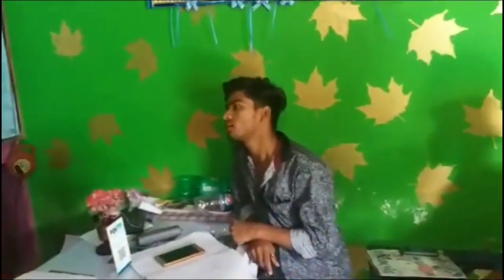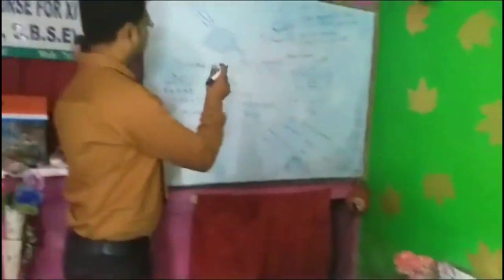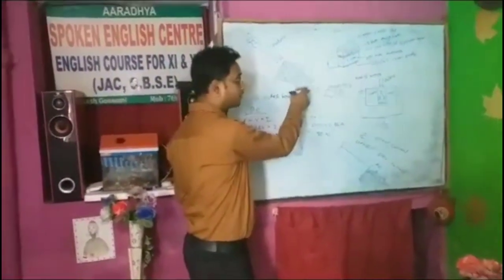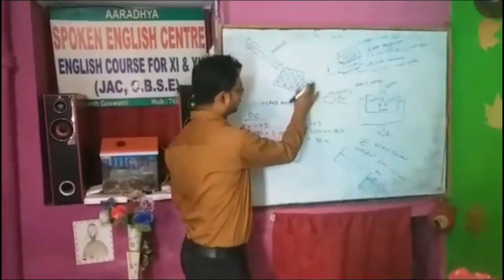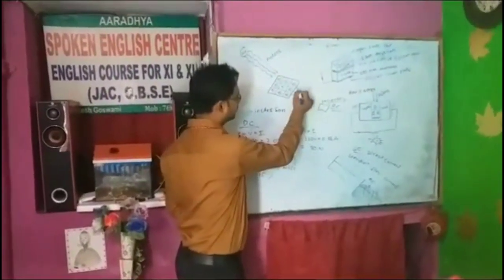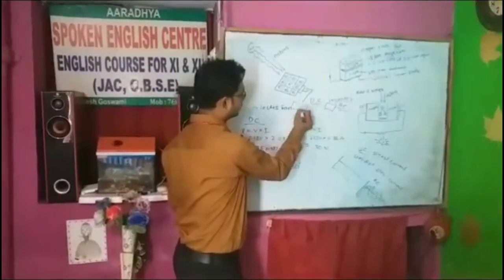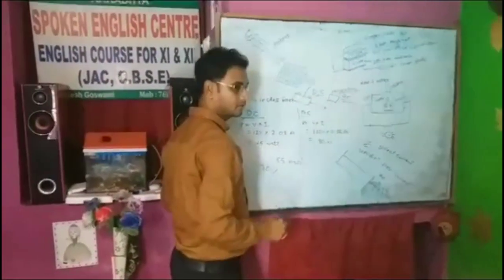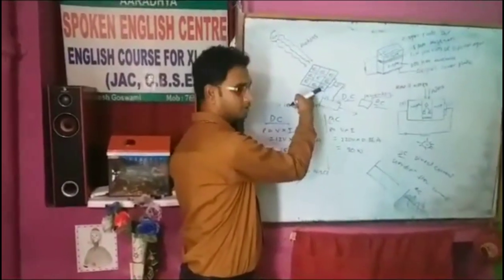Excuse me Sir, I have one question. If sunlight is not available, then how will we use it? If sunlight is not available, then we can use it in off-grid process. Off-grid process means that we can store the energy — we put a battery here and charge it, and after that we can use it at night whenever sunlight is not available. This is called off-grid process.